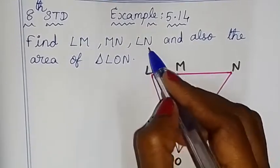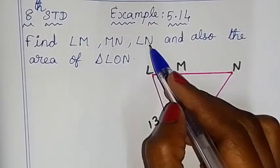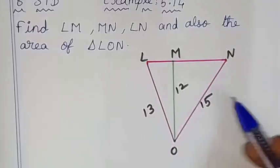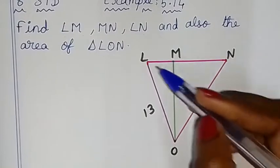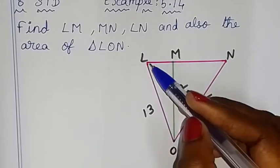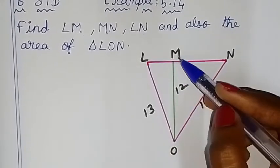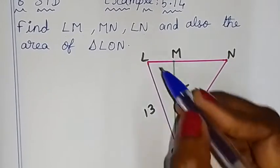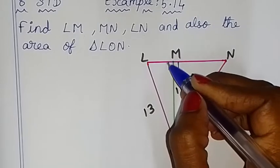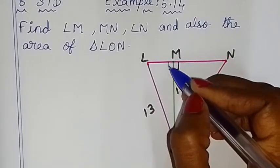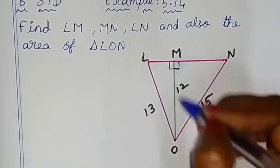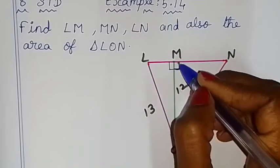We have LM value, MN value, and LN value — three values we have to find, and we also have to find the area of LON. This is the triangle. LOM is one triangle, MON is another triangle. This is the right angle. There is a total of 180 degrees on a straight line, so one side is 90 degrees. If it is perpendicular, it is 90 degrees.